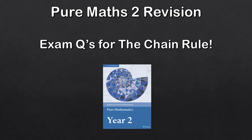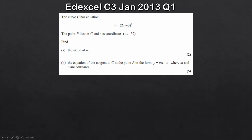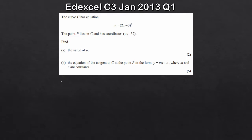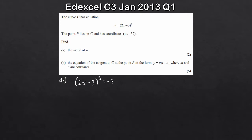The first question comes from one of the old C3 exams, January 2013, question one. We're given a curve C with a given equation, and we're given the coordinates (w, -32). Part a wants us to find the value of w. We're given y = -32 and we have the equation, so we can work out what w will be. So (2x - 3)^5 has to be equal to -32.